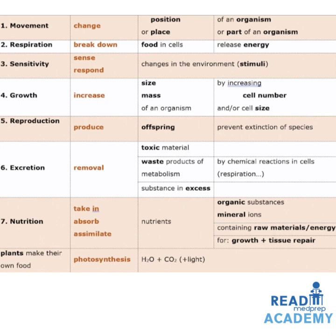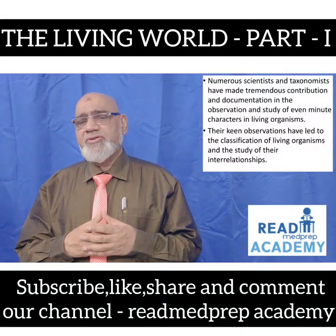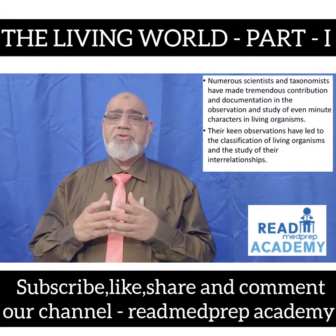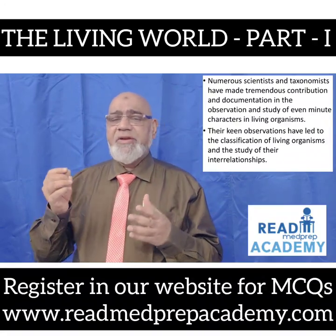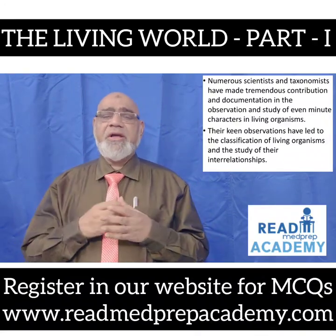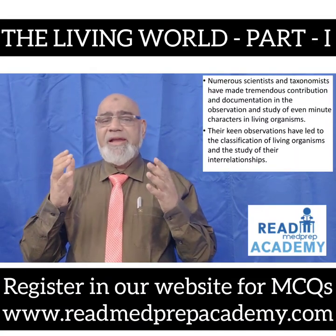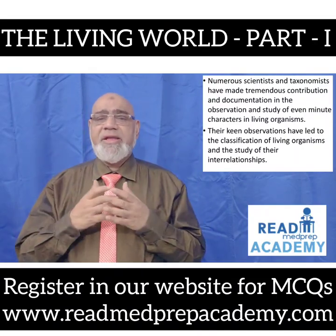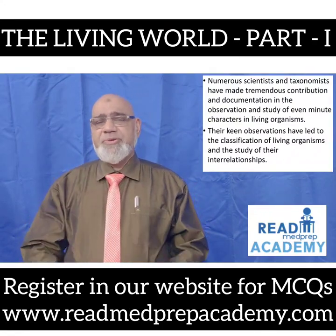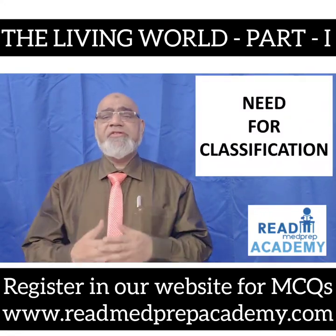Nutrition is where organisms take in, absorb, and assimilate nutrients — organic substances and mineral ions — providing raw materials and energy for growth and tissue repair. Plants make their own food by photosynthesis, where water and carbon dioxide are utilized in the presence of light to form starch. Numerous scientists and taxonomists have made tremendous contributions in observing and studying even minute characters in living organisms, leading to the classification of living organisms and the study of their interrelationships. Now let us move on to the need for classification.